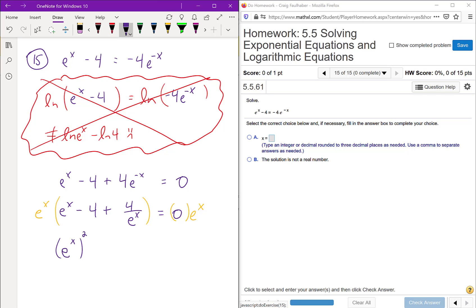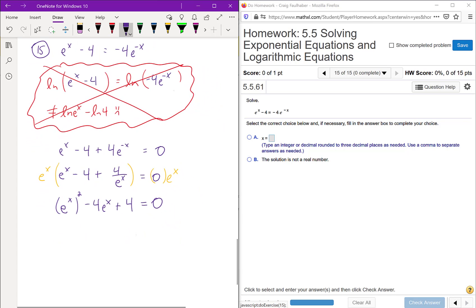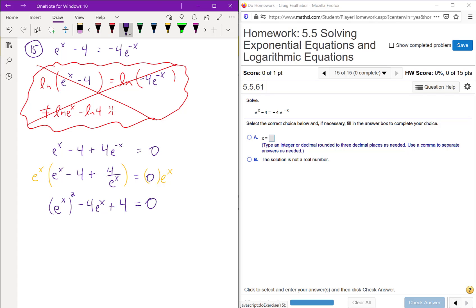e to the x times negative four is negative four e to the x. And on this last term, e to the x cancel in the numerator and the denominator, and we're left with a four. On the right, zero times anything is zero. And what you might just recognize now is that this equation does in fact have the form of a quadratic.